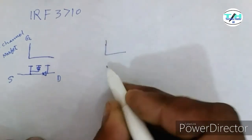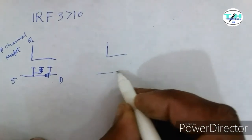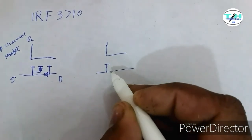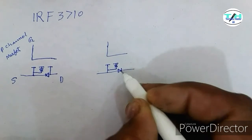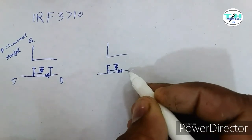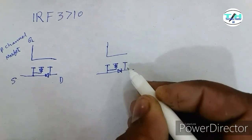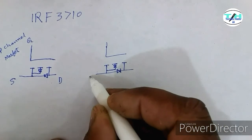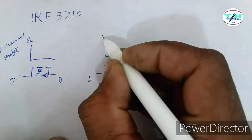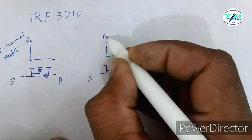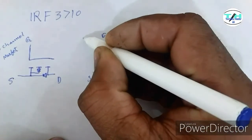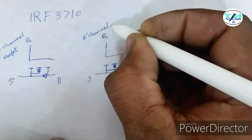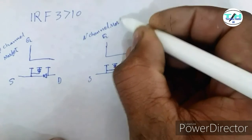The second is the N-channel MOSFET. Its symbol is something like this. It has three terminals: source, drain, and gate. This is the N-channel MOSFET.